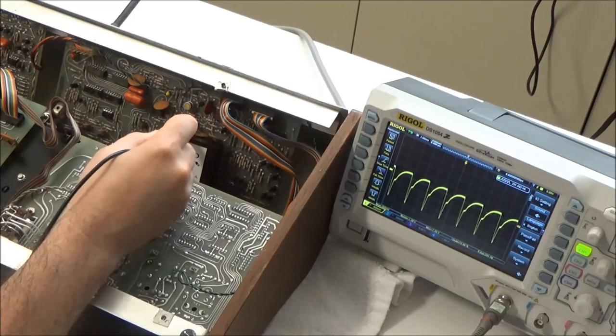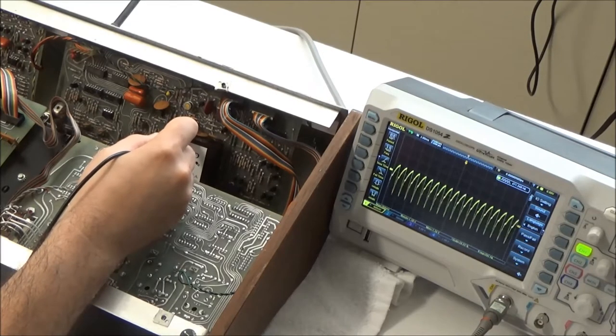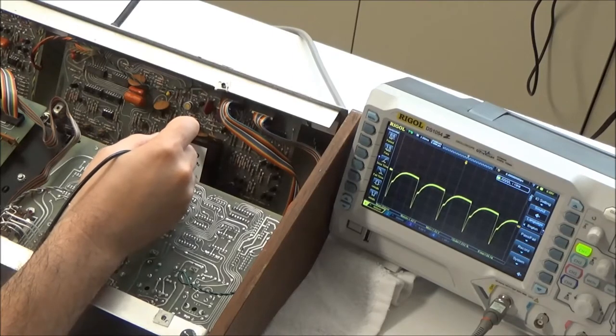This is 500 millivolts per division. So we have a couple volts peak-to-peak waveform. That's what a good-looking VCF output should look like.